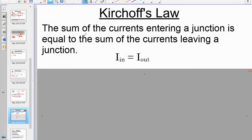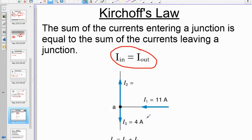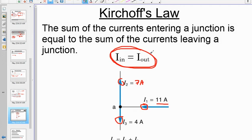Kirchhoff's first law is quite simple — it comes into play in parallel circuits. It states that all currents entering a junction must equal the sum of all currents leaving: I_in = I_out. For example: 11 amps flows into a junction, 4 amps flows away in one branch, so the other branch must carry 7 amps (7 + 4 = 11). That gives us I2.